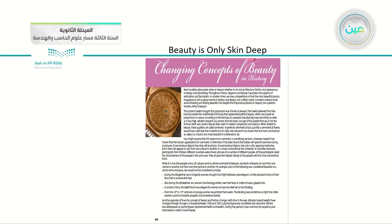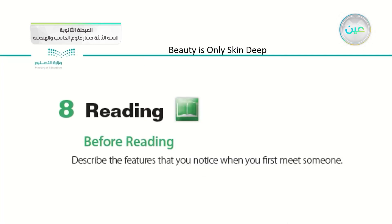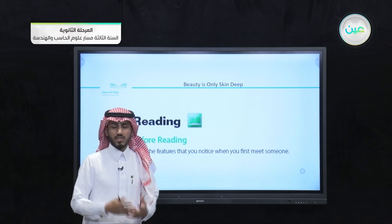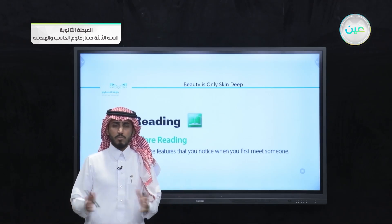Today on page 40, we have an essay called 'Changing Concepts of Beauty in History.' Today we have the eighth skill in unit three, which is reading. We have here a before-reading statement: describe the features that you notice when you first meet someone. The answer for this question is going to vary from one person to another.